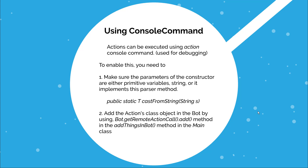To add an action using a console command, you need to make sure of two things. First, the parameters of the constructor must be either primitive variables, strings, or they must implement the method public static T castFromString(String s). This method converts a string into an object — for example, converting a string into a client object. This is basically parsing. This method is actually implemented in the client and the chat group class, so you can look into the Subbot API source to see how it is defined. The second thing you need to do is add the action's class object in the bot using the bot.getRemoteActionCall.add method in the addThingsInBot method in the main class. After you do these two things, you just use the action console command to add the action to the queue.